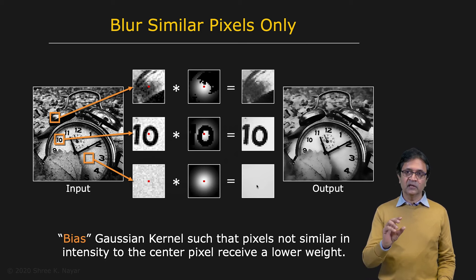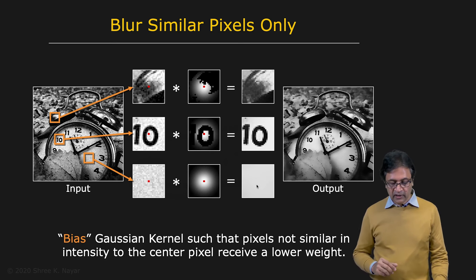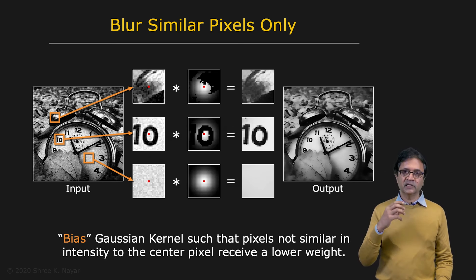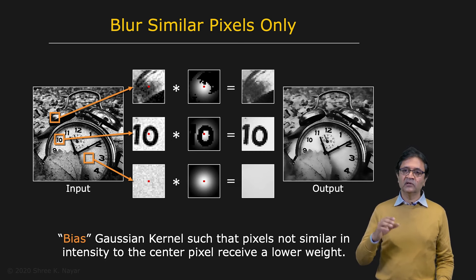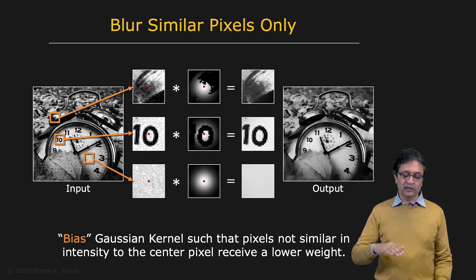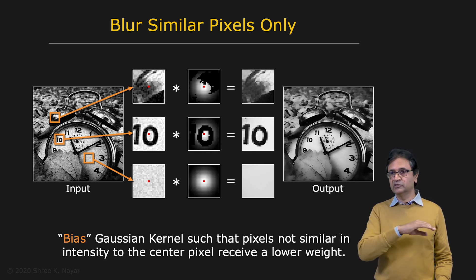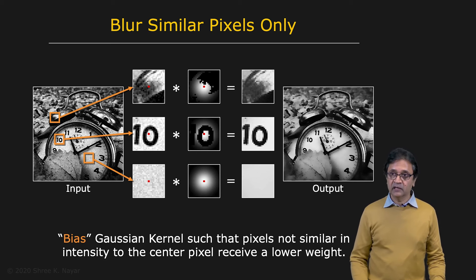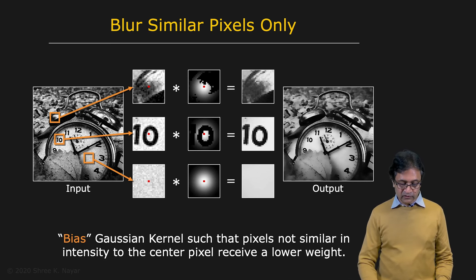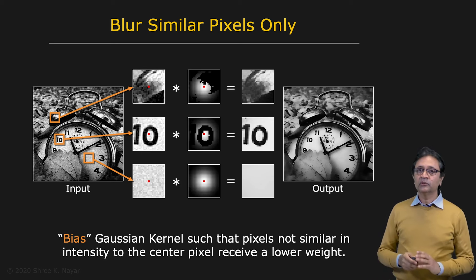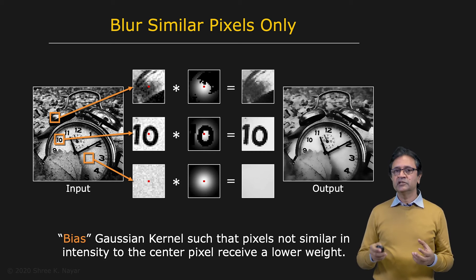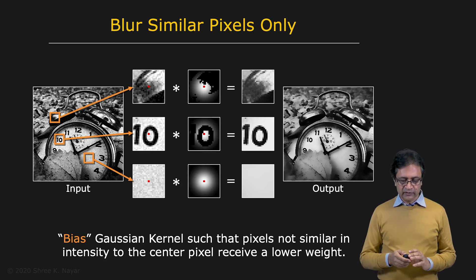Here is a little hack we introduced. By simply biasing the Gaussian kernel such that pixels not similar in intensity to the center pixel receive lower weight — in our case, a weight of zero — that can take you a long distance. This is your input image and this is your output image, and you can see that you get a very clean output image. So what we would like to do is find a principled way of doing this, and that brings us to the bilateral filter.